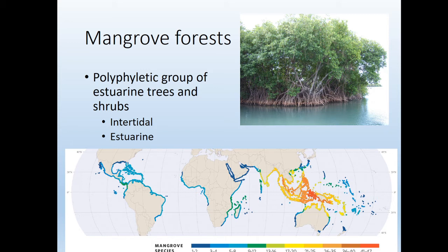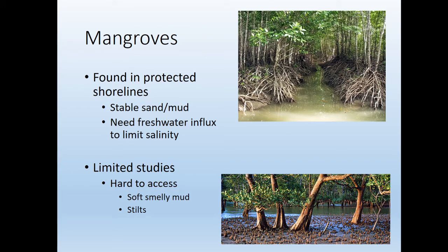Another habitat found in soft sediments is mangrove forests. Mangroves are polyphyletic — they're not all in the same group; there are different families and strategies. Generally they have stilt roots and grow in intertidal and estuarine areas. You need a protected shoreline, stable sand and mud, and some freshwater influx to limit salinity. They can't grow in pure salt water. We don't know that much about them — they're really hard to access, with mud up to your hips and dense trees.